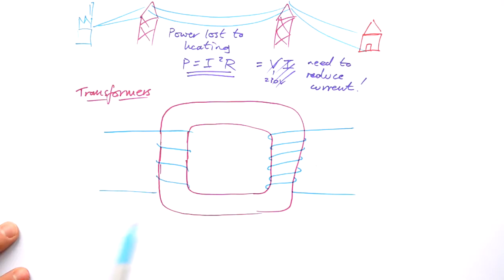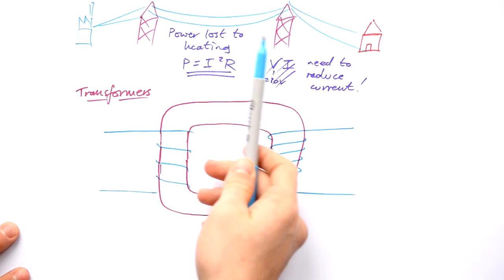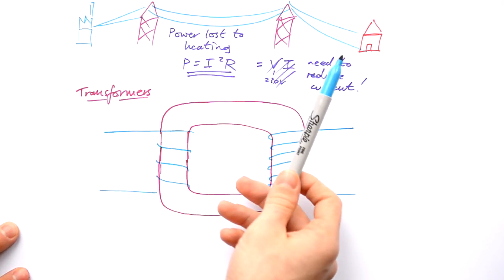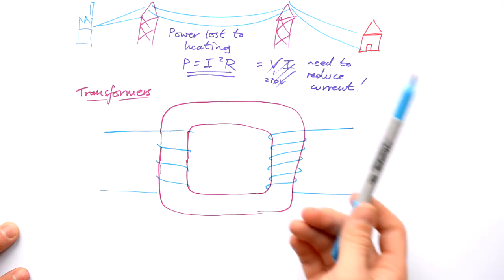Transformers use electromagnetic induction to reduce the current that goes into the national grid. And then we have another transformer on the other side to increase the current again so that it's usable.